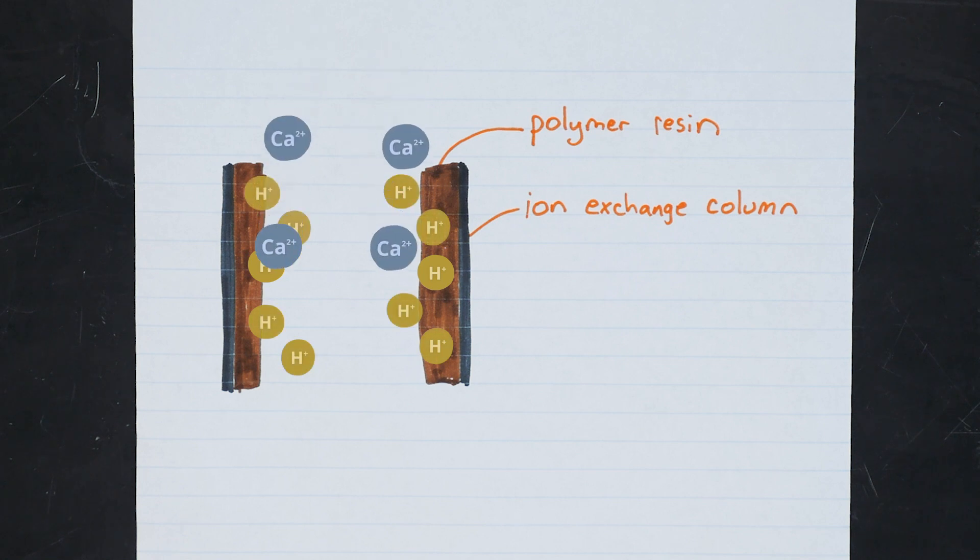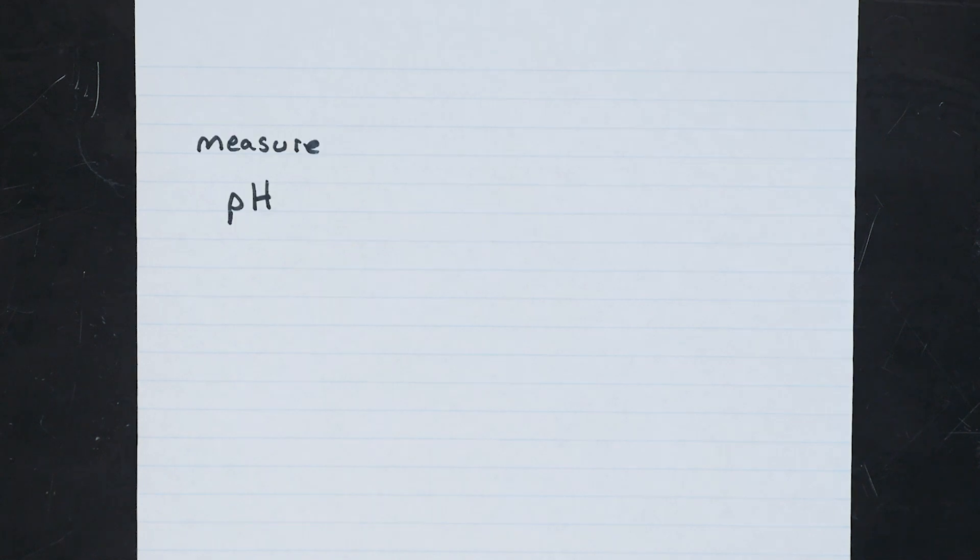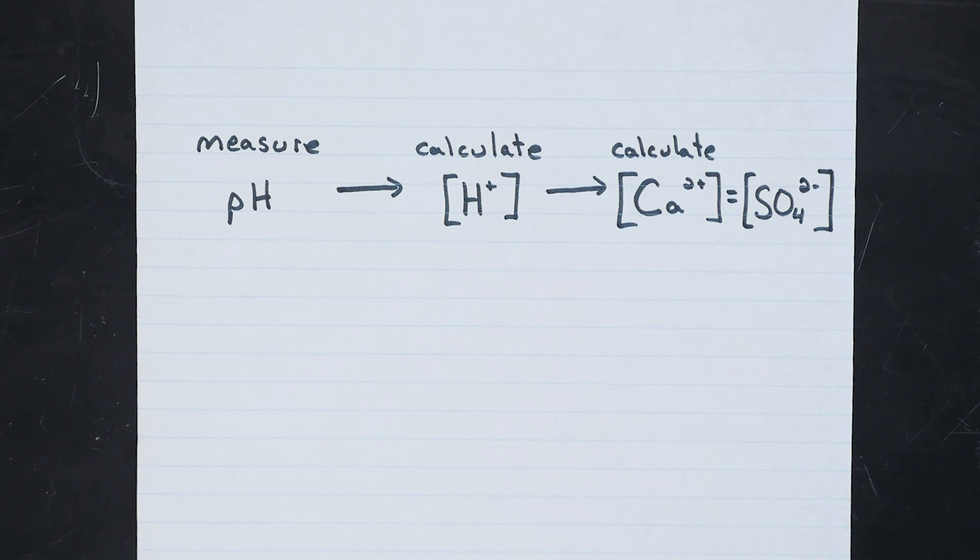So calcium ions in, hydrogen ions out. And since calcium ions have a 2-plus charge, two hydrogen ions come out for every one calcium ion that goes in. Now we are really good at measuring the concentration of H-plus ions via a pH titration. So if we measure the concentration of H-plus ions, we can work out the concentration of calcium ions, which must be equal to the concentration of sulfate ions, which allows us to calculate the solubility product constant, which is the purpose of today's lab.